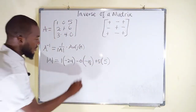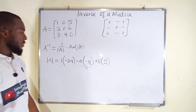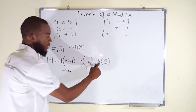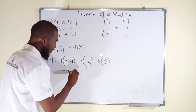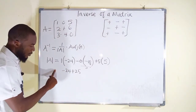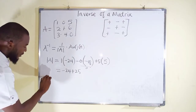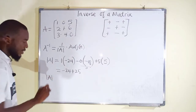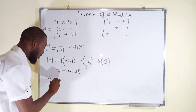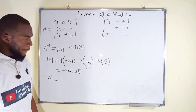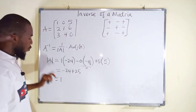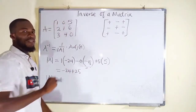Now let us simplify. The first term gives negative 24, the second term is 0, and the third term gives 25. Therefore, the determinant of this matrix is negative 24 plus 25, which equals positive 1. So 1 is said to be the determinant of this matrix A.